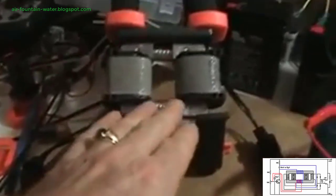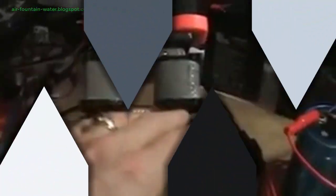Initiating the circuit requires a brief touch of a 12-volt source to the output terminals or waving a permanent magnet close to the red and blue coils. Stefan Levin even suggests an ingenious alternative involving a piezo crystal from a lighter, connected to an extra coil, to generate the necessary voltage spike. Once activated, the system becomes self-sustaining, raising the intriguing challenge of devising a means to switch it off.